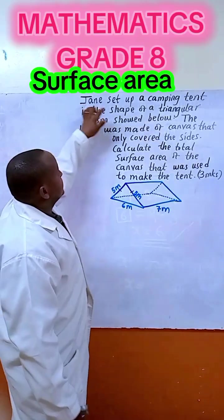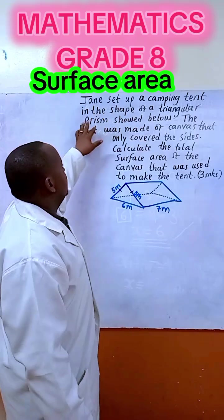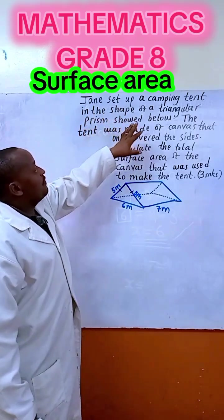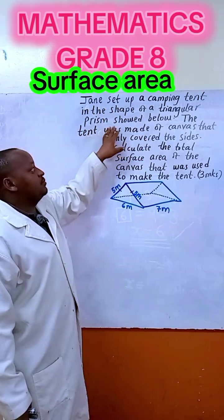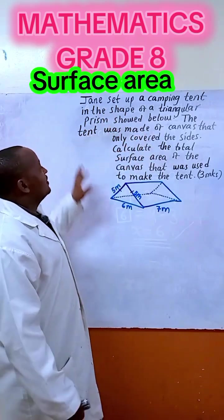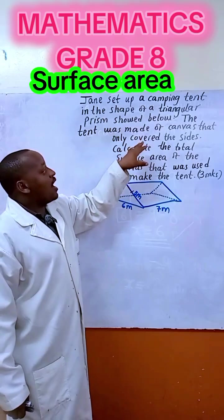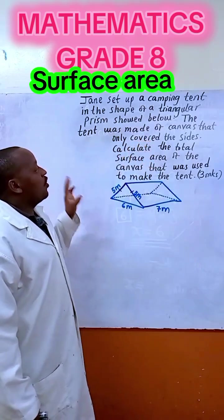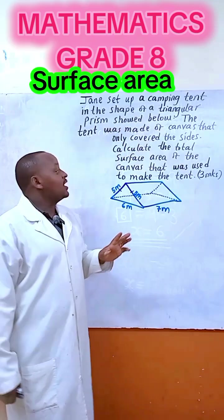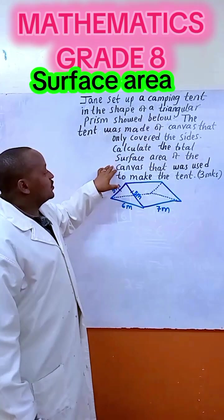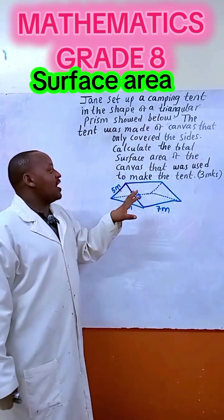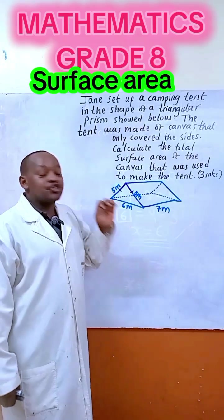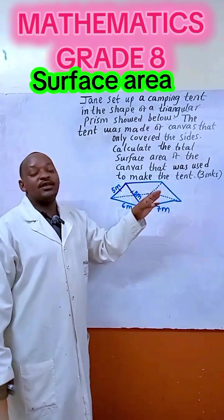Jane set up a camping tent in the shape of a triangular prism shown below. The tent was made of canvas that only covered the sides. Calculate the total surface area of the canvas that was used to make the tent.